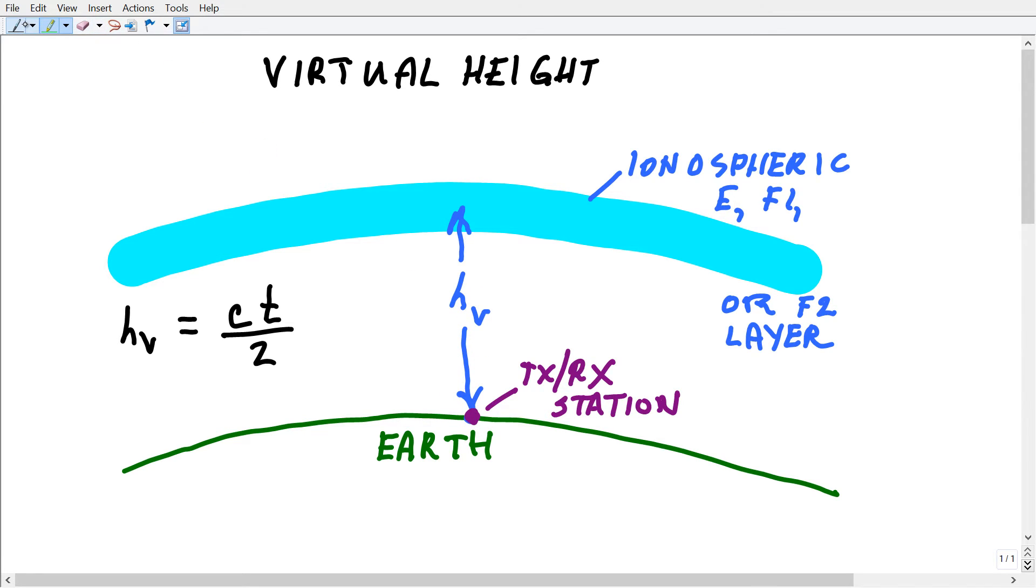When you do that, you get a particular or rather exact value for the height because the radio signal, as it goes up and comes back, takes a little bit of time to turn around and then return to Earth.